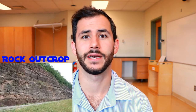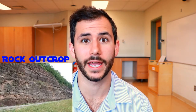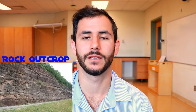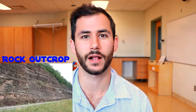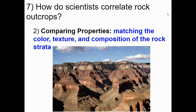Now that we have a better idea of what we're actually trying to correlate, let's look at the second method — comparing properties of rocks. When we compare the properties of rocks we're matching the color, texture, and composition of rock strata, which is simply a layer of rock. Take a look at the image on screen and tell me how many different rock layers you can correlate just based on color.